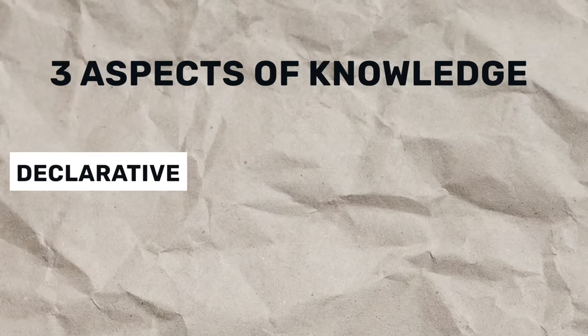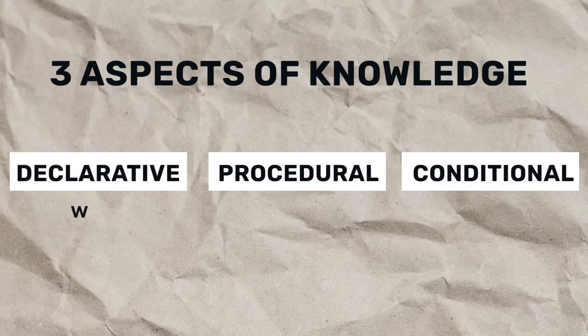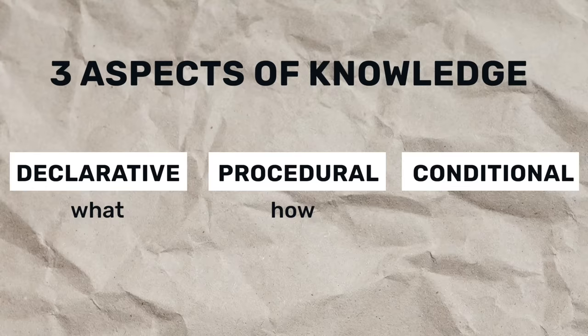He begins by referring to three types of knowledge: declarative knowledge, procedural knowledge, and conditional knowledge. Declarative knowledge is sort of a fact. Procedural knowledge is how to do something. And conditional is when to do something. And he tries to apply this to language.